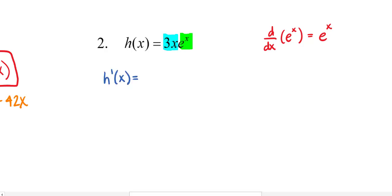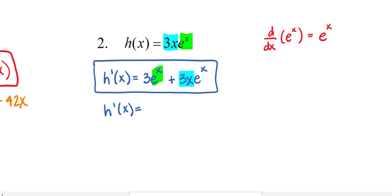So h prime of x. Well the derivative of 3x is 3 and I will leave the green factor alone, plus now I will leave 3x alone and I will take the derivative of the green. The derivative of e to the x is e to the x. Again that sort of explanation or understanding will probably come later in the chapter when you talk about natural log differentiation. This is a derivative. I will admit this is complete.